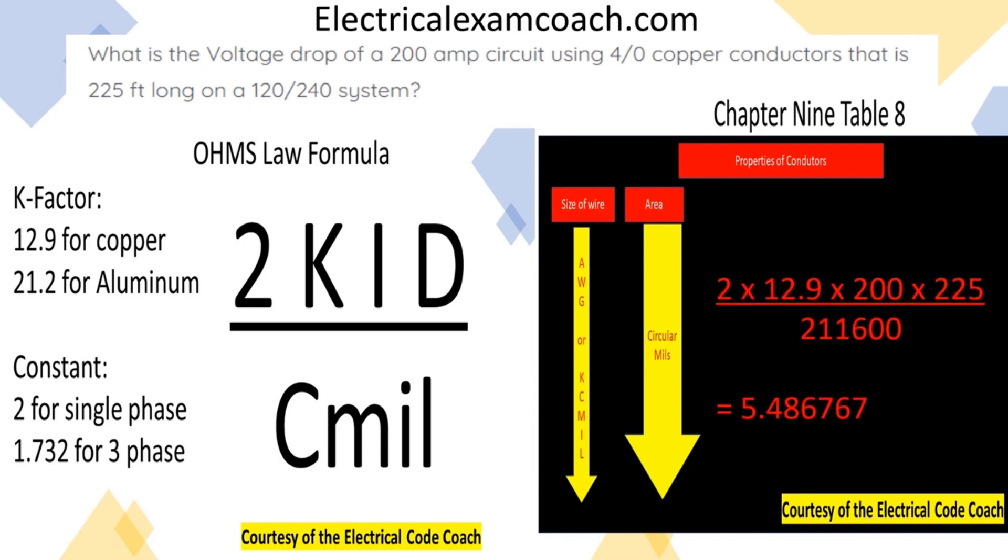After we work out all our math, and this is what I love about formulas. Just plug in what you know and then spit out the answer. 2 multiplied by 12.9 multiplied by 200 multiplied by 225 divided by the circular mills of a 4-aught copper conductor.